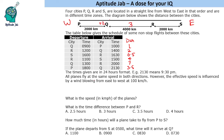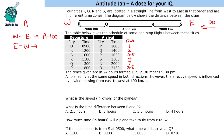The speed differs in each direction because of the wind. The wind blows east to west at 100 km/h. If the plane's base speed is 'a', then flying west to east the effective speed is a minus 100 (headwind), and flying east to west the effective speed is a plus 100 (tailwind).